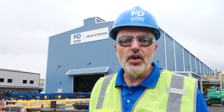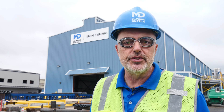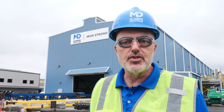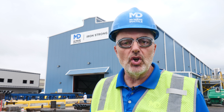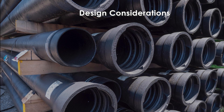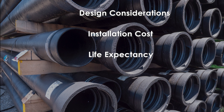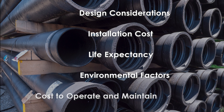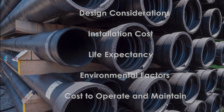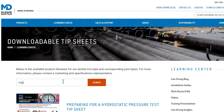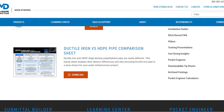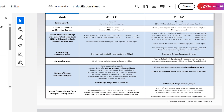As stated at the start of this video, the specifier and end user should do their due diligence and make an educated decision concerning selecting the correct pipeline material. You should not be reliant solely on material costs, but rather design considerations based on the pipeline application, all contributing costs related to accurate installation of the chosen pipe, life expectancy of the line being put into service, environmental factors now and in the future, as well as the cost to operate and maintain the system. You'll find a link to a tip sheet in the video description where you can download a side-by-side real-world comparison between ductile iron pipe and HDPE.